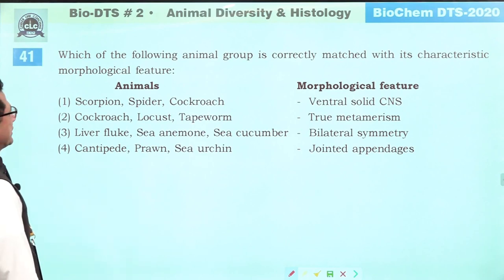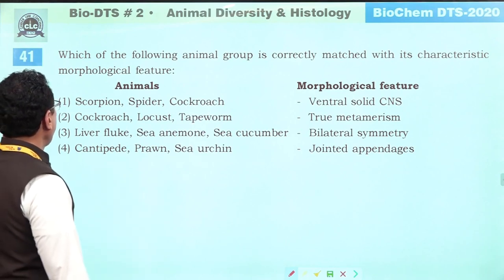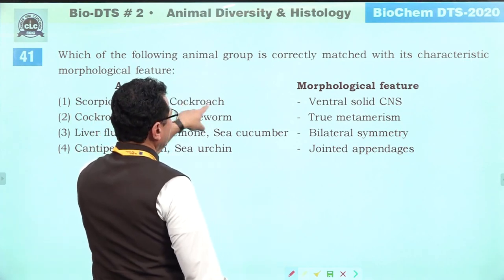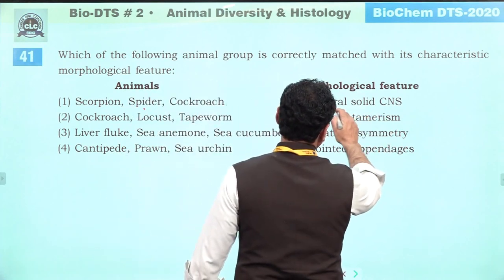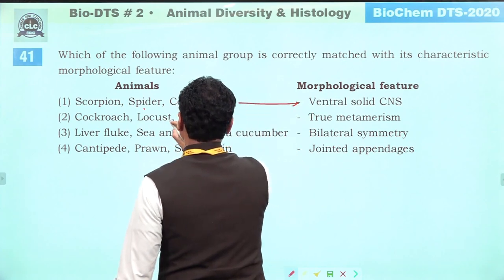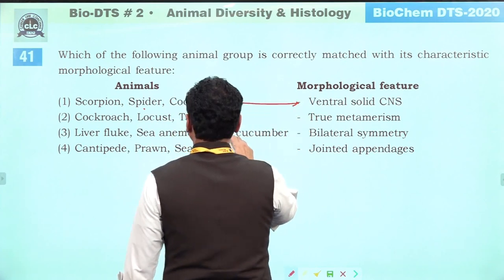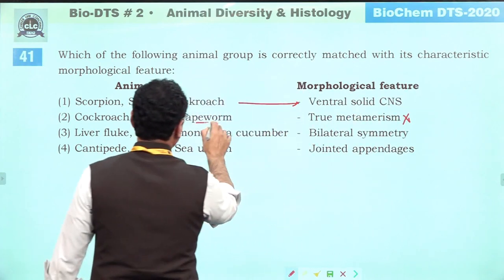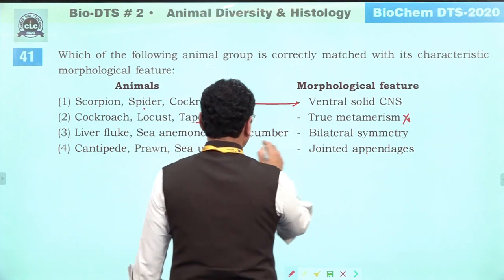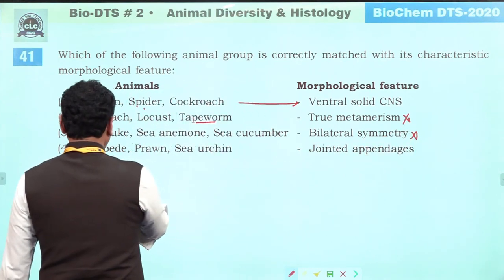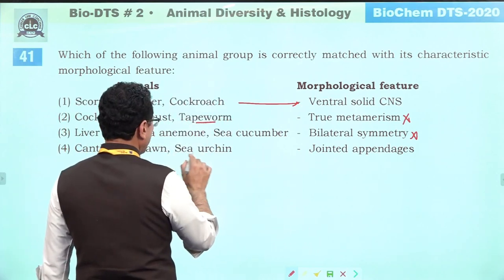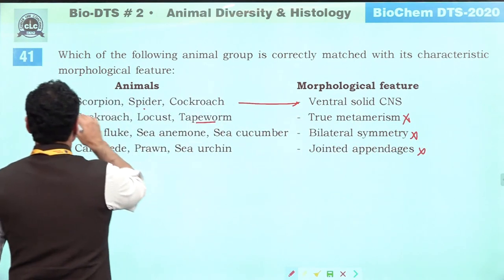Which animal group is correctly matched with its characteristic morphological features? Scorpion, spider, cockroach — ventral solid CNS: correct match. Cockroach, locust, tapeworm — tapeworm does not show true metamerism: incorrect. Liver fluke, sea anemone, sea cucumber — bilateral symmetry: not all bilateral, incorrect. Centipede, prawn, sea urchin — jointed appendages: sea urchin does not have jointed appendages, incorrect. Correct answer is one: scorpion, spider, and cockroach with ventral solid CNS.